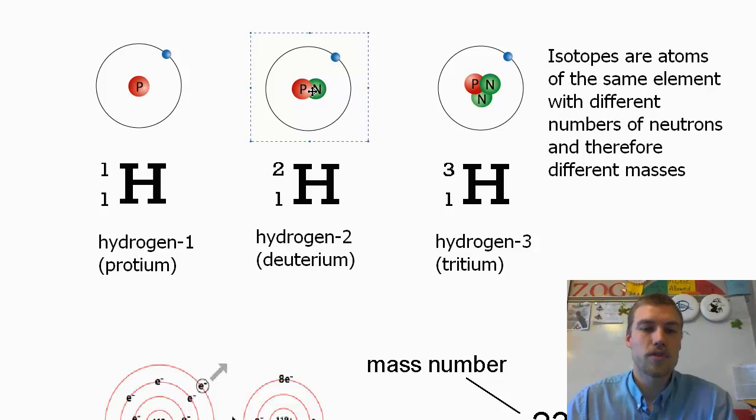If we take a look over here, hydrogen 2, we've got one proton and one neutron, which if we add that together, 1 plus 1 is going to give us our mass of 2.